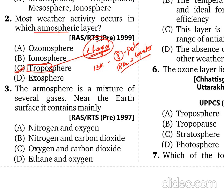The next question states that the atmosphere is a mixture of several gases. Near the Earth's surface, more than 80% of the density of the atmosphere is within 32 km height, which covers the Troposphere and Stratosphere — the most dense layers. Nitrogen is the most abundant at around 78%, while oxygen is about 21%, followed by Argon, Carbon dioxide, and other gases.